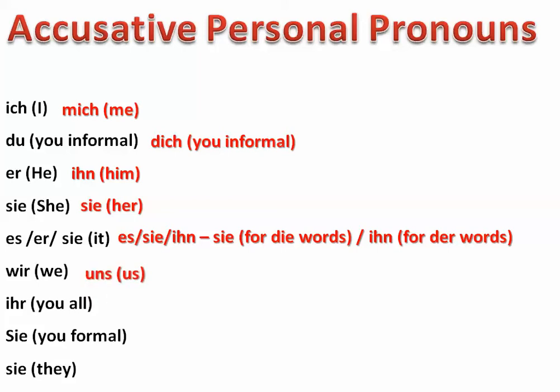Uns is 'us.' Euch — as we say here in Georgia, y'all, but 'you all.' Sie formal is sie, and sie for 'they,' and as a direct object 'them' — 'Ich sehe sie,' I see them. So these are the personal pronouns. You want to make sure you are familiar with them, both in the nominative and in the accusative.